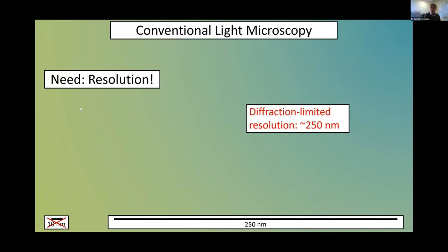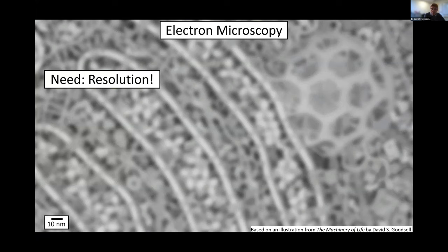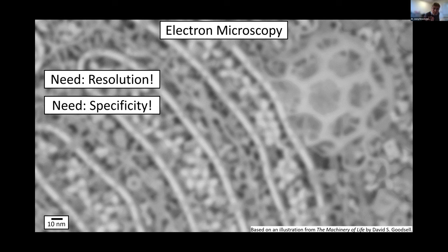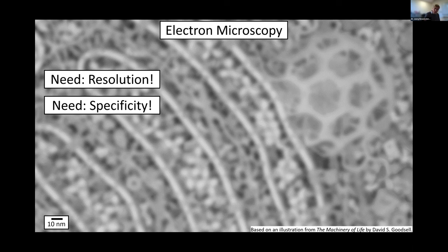One solution to achieve resolution down to the 10-nanometer scale is to use electron microscopy. Electron microscopy really gets us down to that resolution, but we lose the identity of the molecules — we don't have specific labeling, and therefore we get a grayscale image rather than a colorful one. So on top of resolution, we need specificity. One solution is super-resolution fluorescence microscopy, where we label molecules of interest with a fluorescent tag.